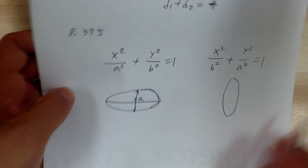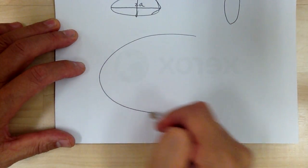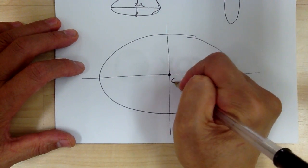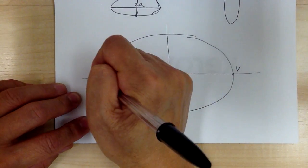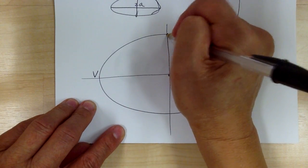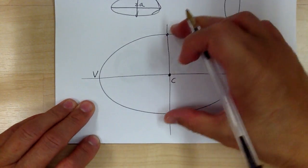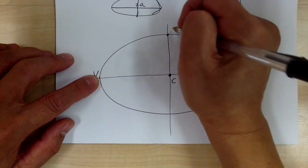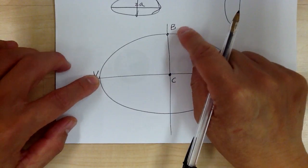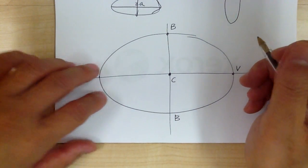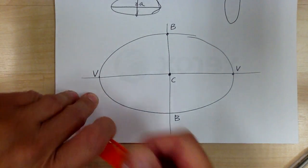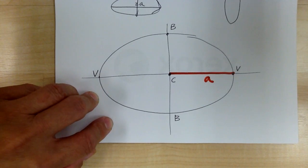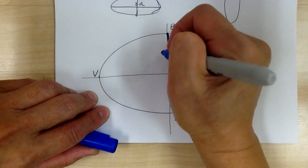Let's look at a bigger graph — a large ellipse. Here's your center. This is your vertex, and this is the other vertex. These are the endpoints of the minor axis. The major axis is longer; the minor axis is shorter. The vertex is always at the end of the major axis, and the endpoints of the minor axis are at distance b. This distance from center to vertex is a, and this distance from center to the minor axis endpoint is b.